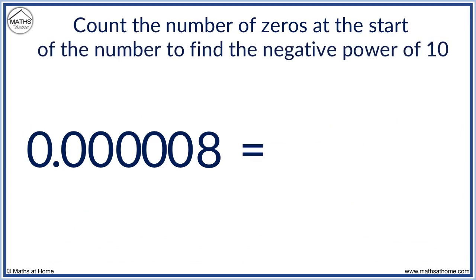Here we have a very small number, which we will write in scientific notation. We want the number of zeros at the start of the number to find the negative power of 10. The non-zero part will go first. We have an 8. We multiply this by 10 to the power of 1, 2, 3, 4, 5, 6. So we put negative 6, as it is a small number starting with zeros. 0.000008 equals 8 times 10 to the power of negative 6.